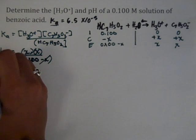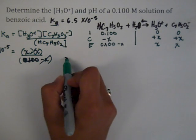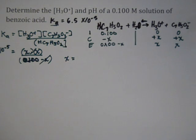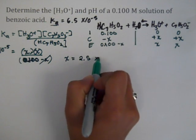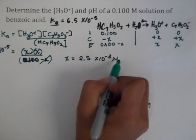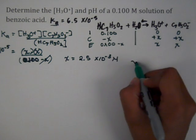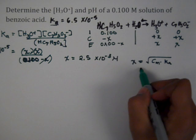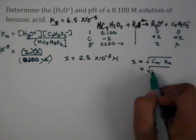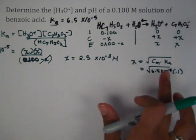When we solve for that, our Ka is going to be 6.5 times 10 to the negative 5. So when we solve for that, our x value is, I got roughly 2.5 times 10 to the negative 3 molar. Now remember, we could have also done the shortcut method, and the shortcut method would have simply just been x equals concentration times Ka and the square root of that. So it would have just been square root of 6.5 times 0.1. The math is going to turn out to be exactly the same.